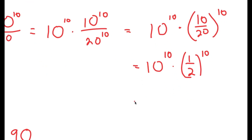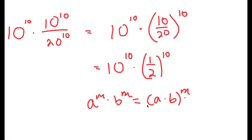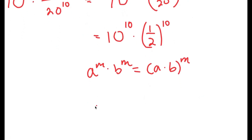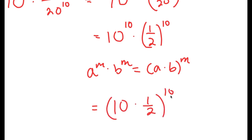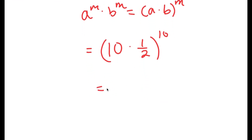Finally, using the property that a to the power of m times b to the power of m equals a times b to the power of m, this turns into 10 times one half to the power of 10, which equals 5 to the power of 10.